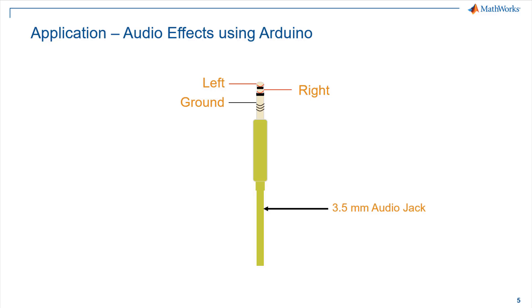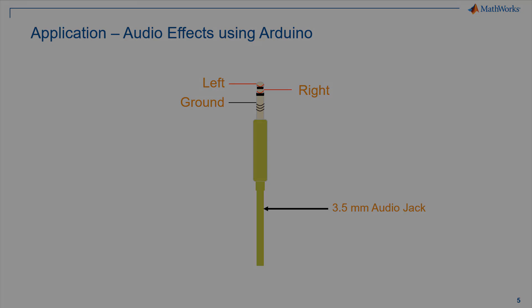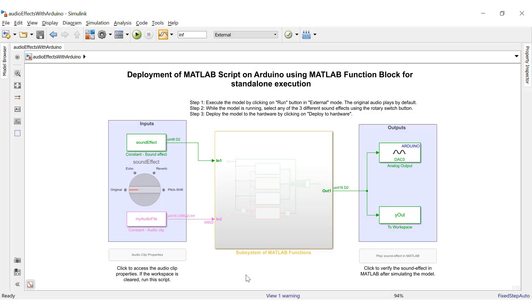That's it. For this audio application, you just need a headset, Arduino, and Simulink. Now with this information, let's get back to our Simulink model. Apart from the MATLAB function blocks, there are a couple of other I/O blocks used in this application.